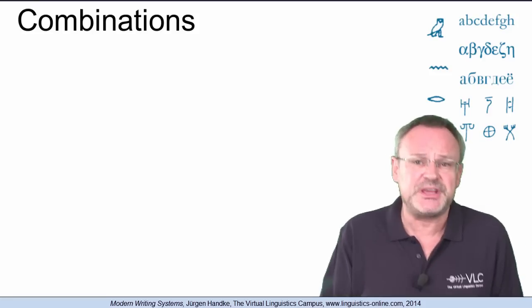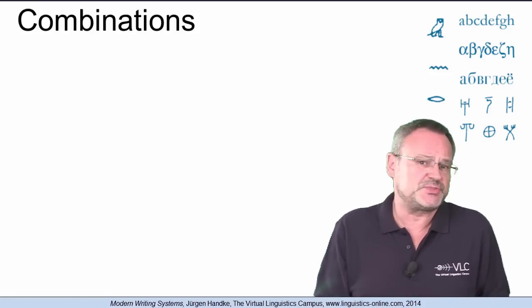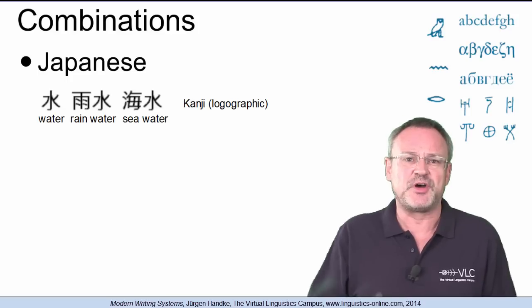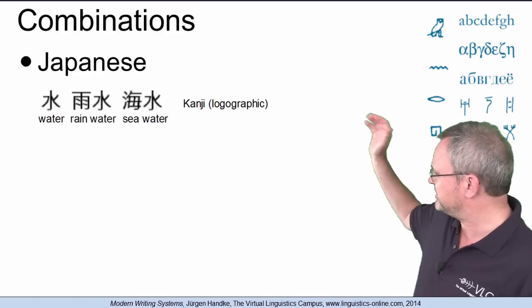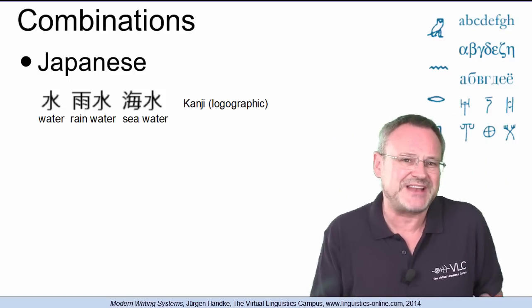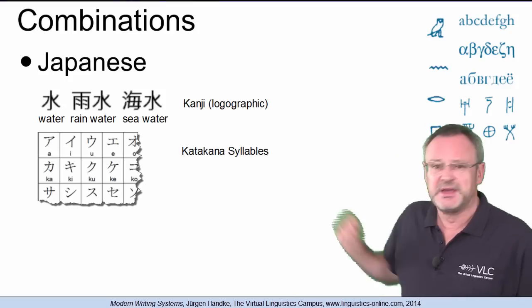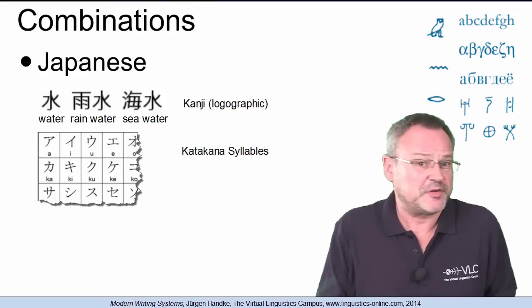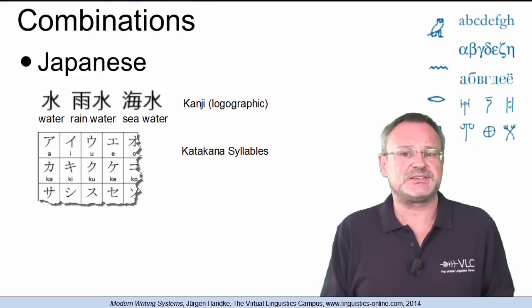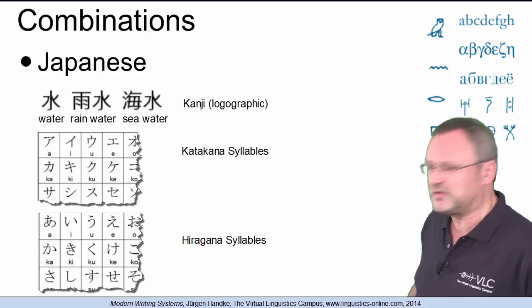Some languages use combinations of several writing systems. The most well-known example is perhaps Japanese, where a set of logographic characters, the kanji, is supplemented by two types of syllabic characters. One is known as katakana and is generally reserved for loanwords. The second system, the hiragana, is employed for grammatical formatives.